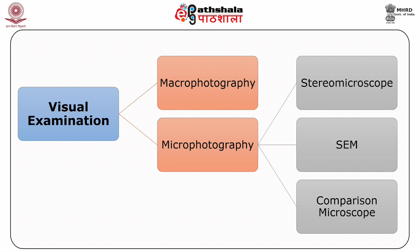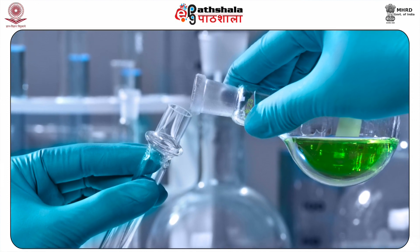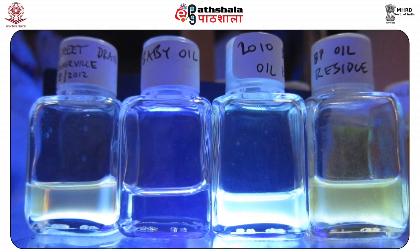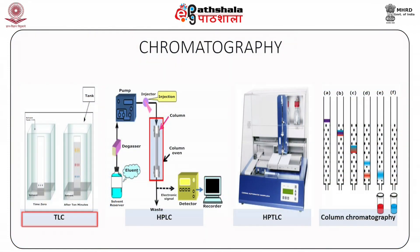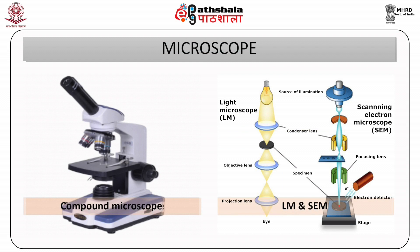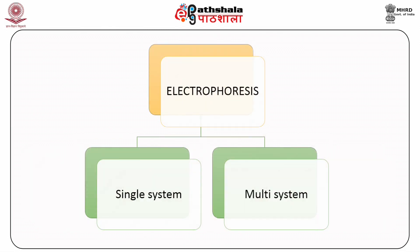Scanning electron microscopy is specially useful because X-ray analysis can be conducted on selected areas of the sample, making it a form of micro-analysis, useful where chemical residues can show unusual elements that may indicate chemical attack. Various chemical color tests are applied on evidences. Ultraviolet, infrared and visible light examination is also done. Chromatography techniques include TLC, HPLC, HPTLC and column chromatography. Spectroscopy includes atomic absorption and emission spectrometry, spectrophotometry, compound microscope, and scanning electron microscope.